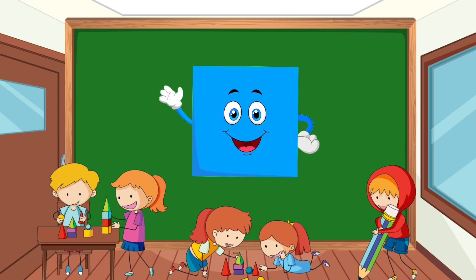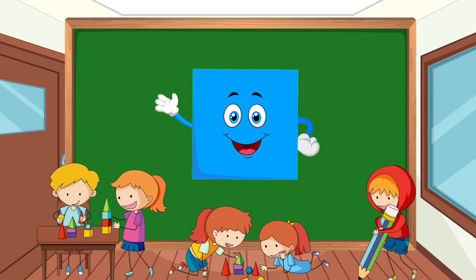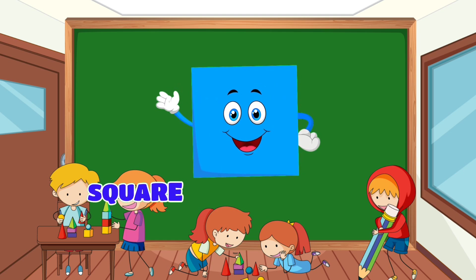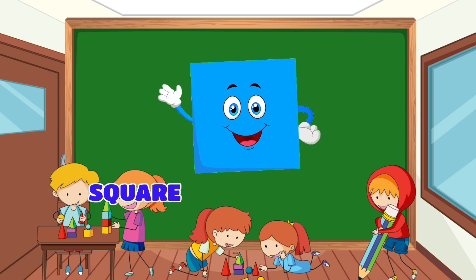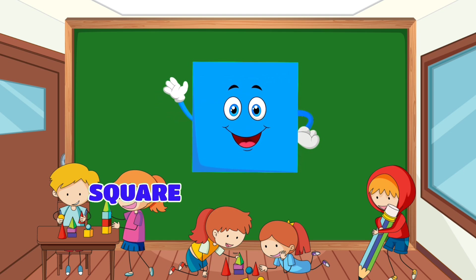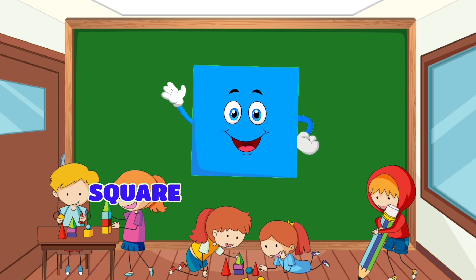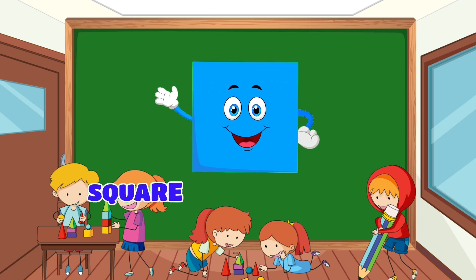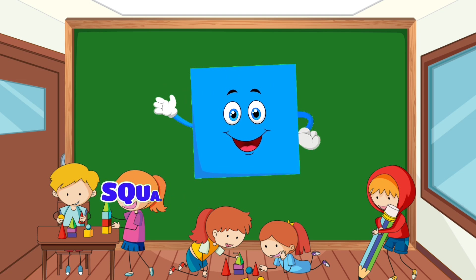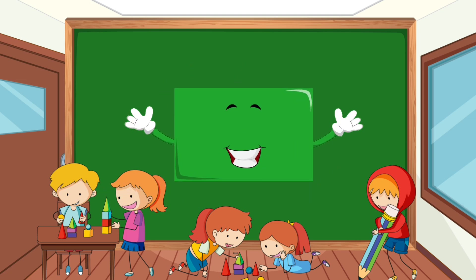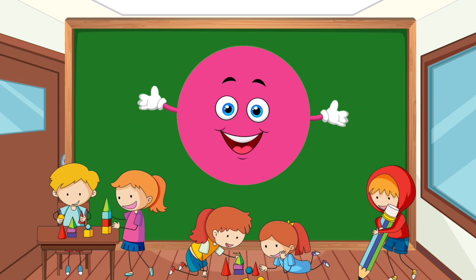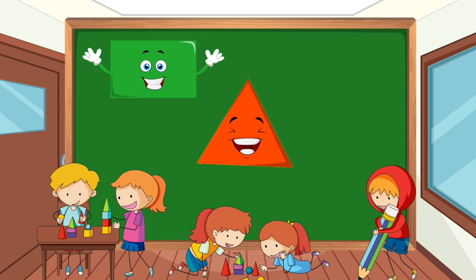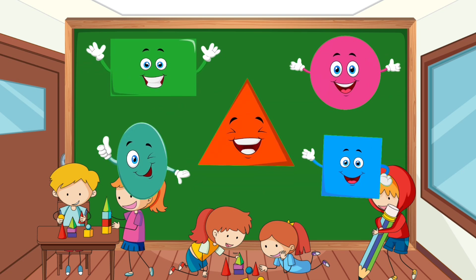I'm a four-sided square, shaped like a box. I'm a four-sided square, shaped like a box, shaped like a box. I'm a four-sided square, and all four sides are the same. Triangle, rectangle, circle, oval, square. Triangle, rectangle, circle, oval, square.